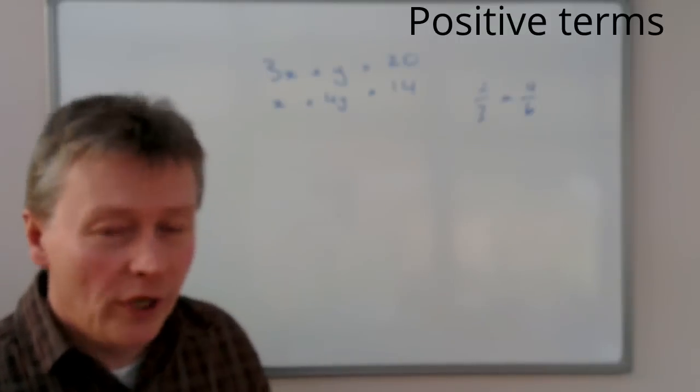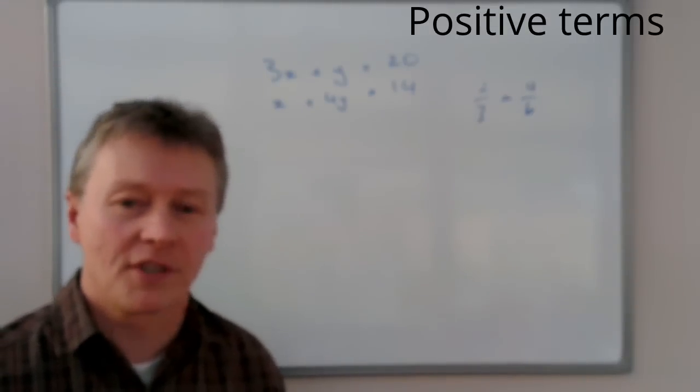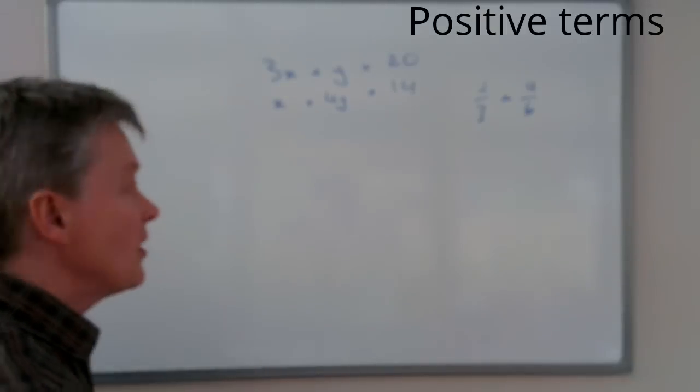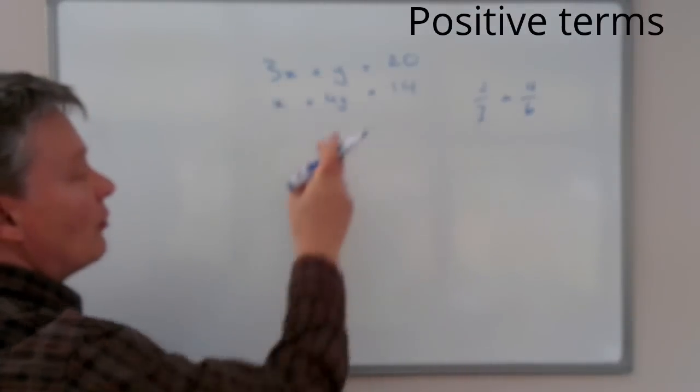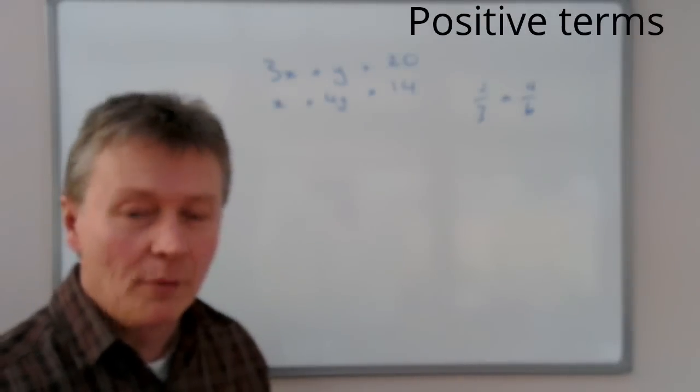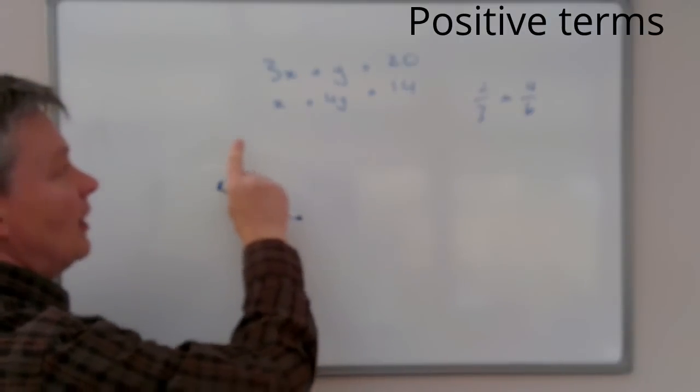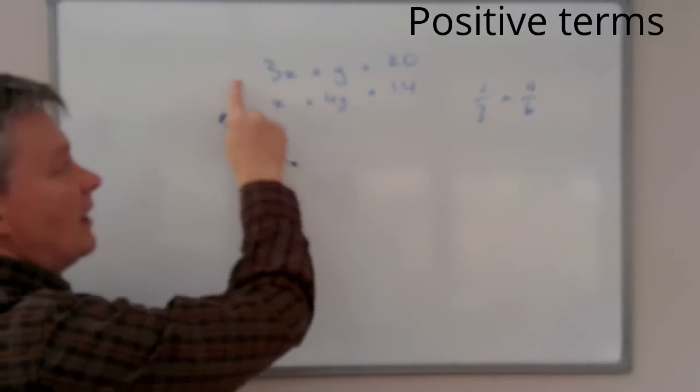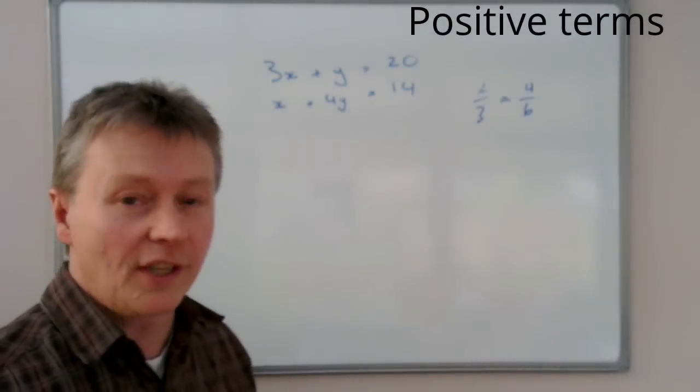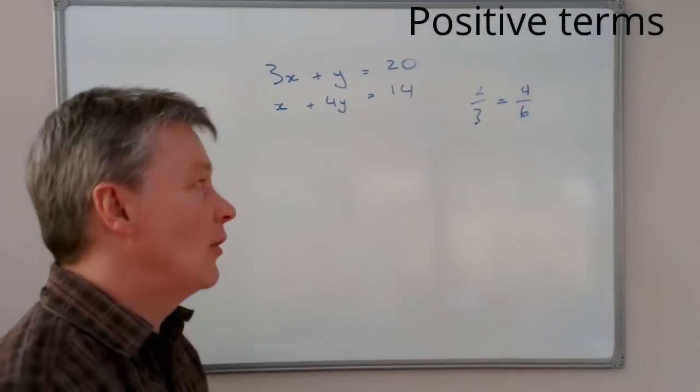Now, if I do that, I've got then a 4y term at the top, in which case then I can take the equations away from each other and I'll end up with the x terms on their own. It doesn't really matter which way you do it, but I think for the purposes of this particular video, what I'll do is I'm going to multiply the top by 4. Because if I do that, I know I'm going to be left with a value of x there take away one single value of x.